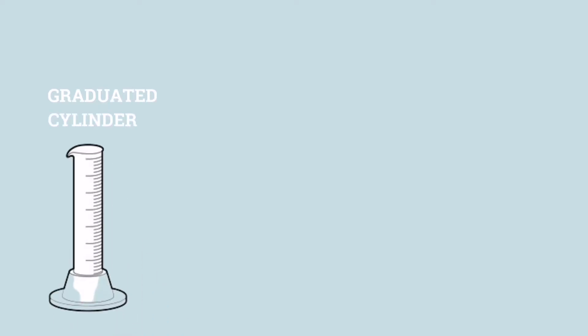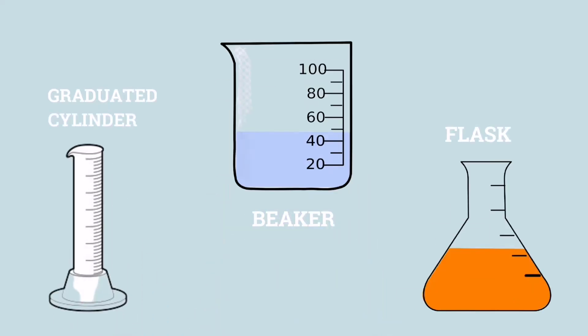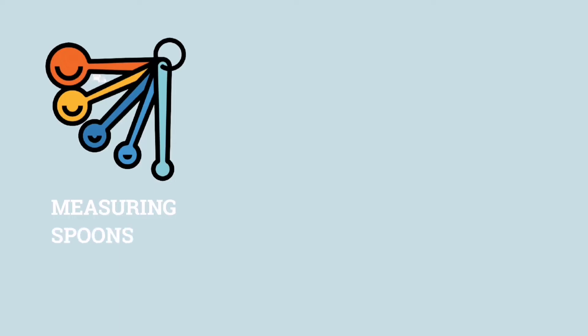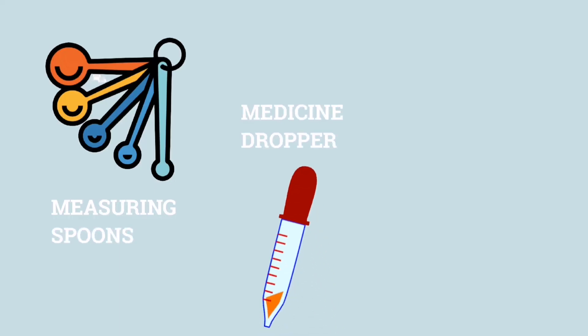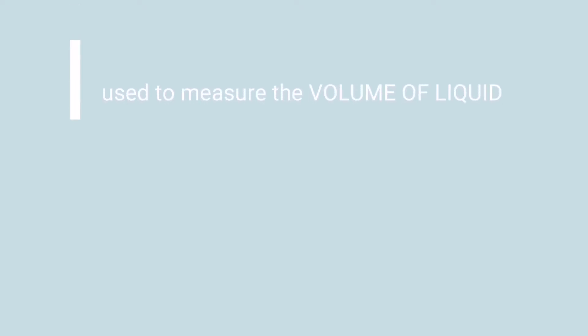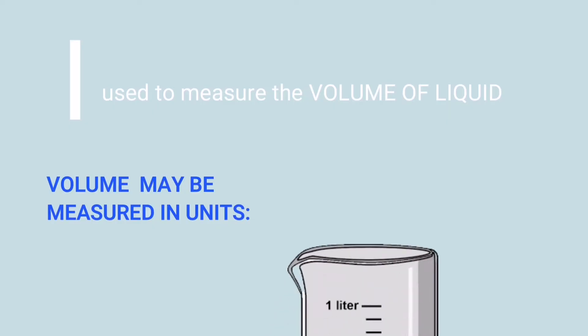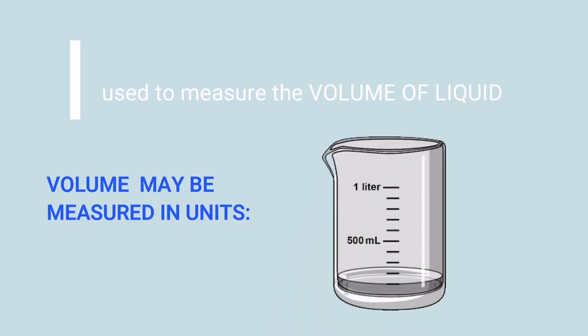Graduated cylinder, beaker, flask, measuring spoons, medicine dropper, and measuring cup — these tools are used to measure the volume of liquid. Volume may be measured in units: milliliters and liters.